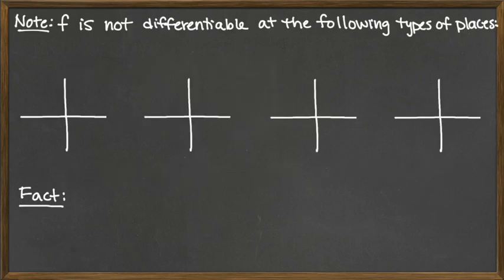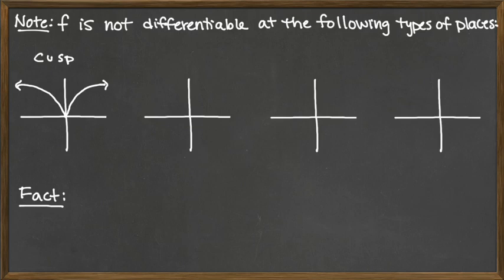So what does it look like if a function is not differentiable? What would a function look like if those limits did not exist? There are various types of places. One is called a cusp, where we're coming in from both the left and the right and they're approaching this sharp curve — a sharp turn happening at x equals 0. The function would not be differentiable at that single point. We could also have a sharp turn with something more linear, kind of like an absolute value — this would be a corner.